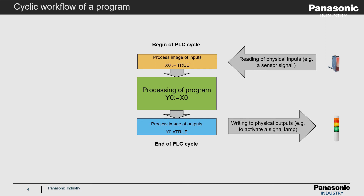At the end of the PLC cycle, the high signal of output Y0 activates the signal lamp. After that, a new PLC cycle begins.